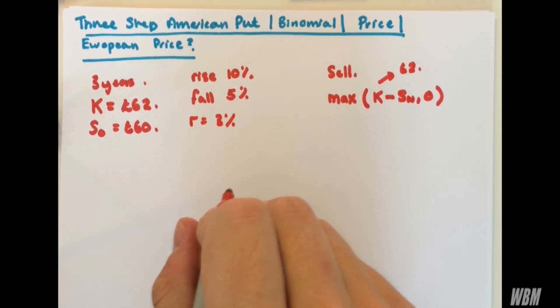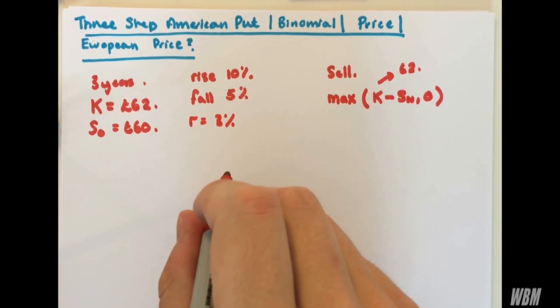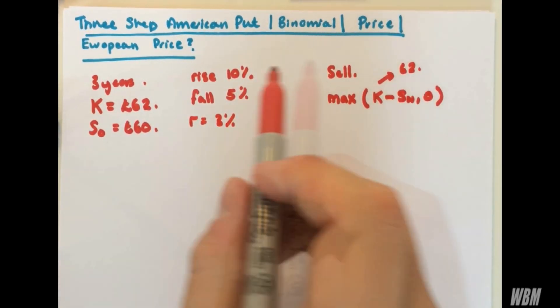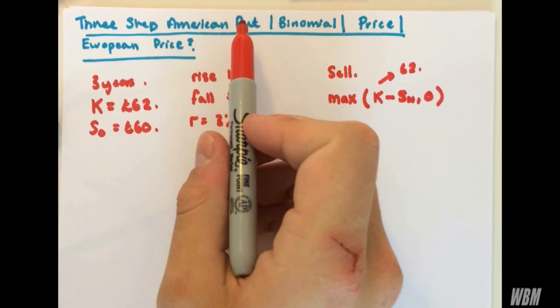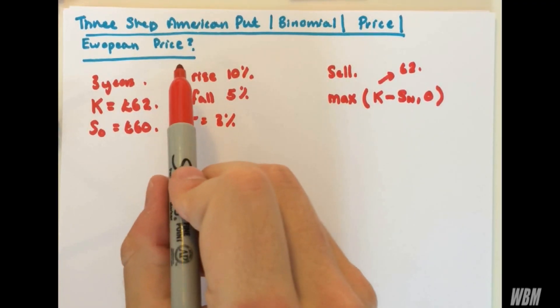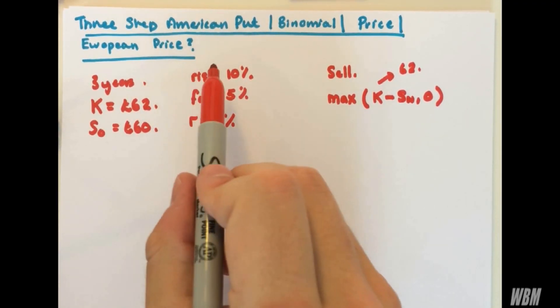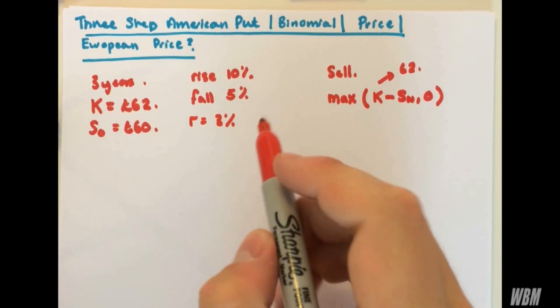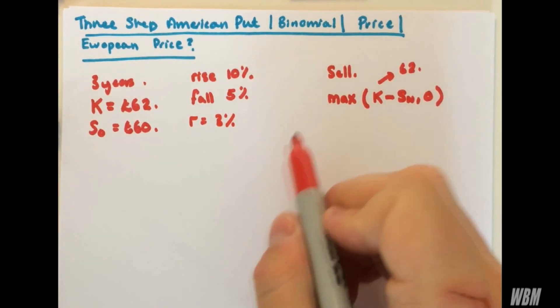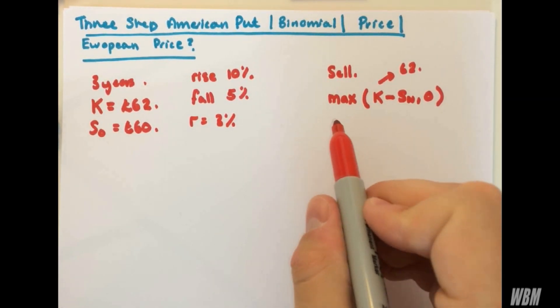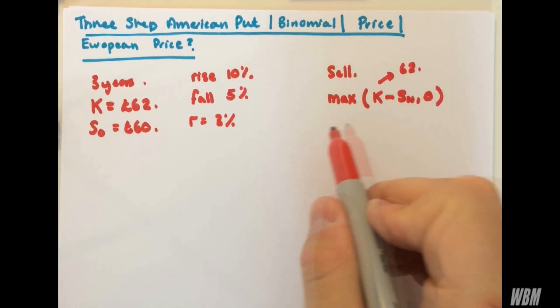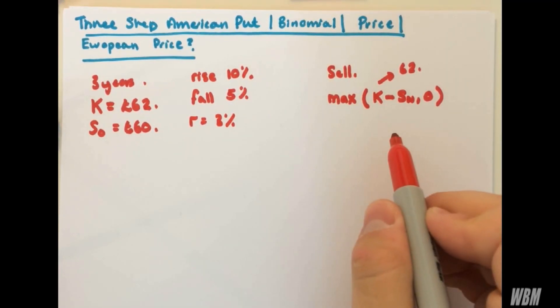The first question is, what is the arbitrage-free price for the American put option? So we're trying to value the American put option. Then we'll find the price of the European put option with the same strike price. The difference between American and European is that the American option can be executed at any of the three time intervals, whereas the European option can only be utilized at the very end.